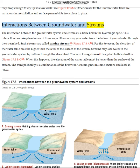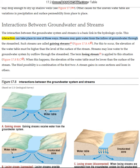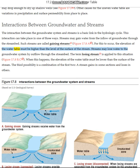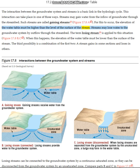Groundwater and streams. The interaction between the groundwater system and streams is a basic link in the hydrologic cycle. This interaction can take place in one of three ways. Streams may gain water from the inflow of groundwater through the stream bed. Such streams are called gaining streams. For this to occur, the elevation of the water table must be higher than the level of the surface of the stream.